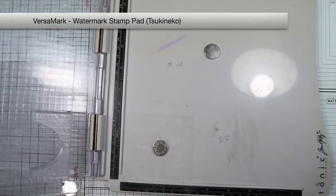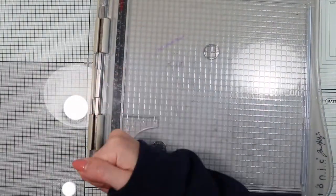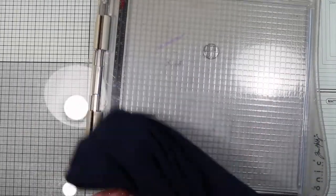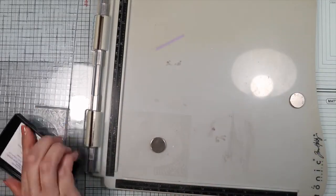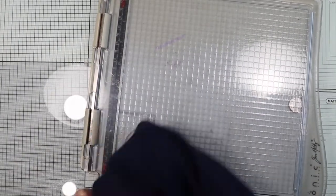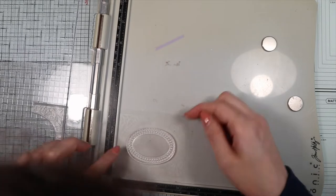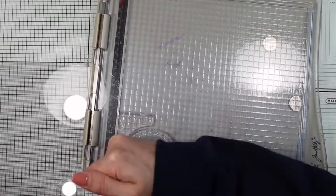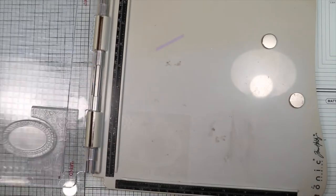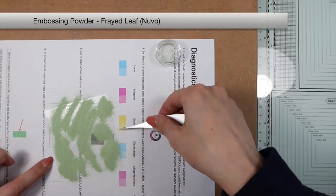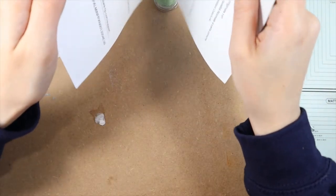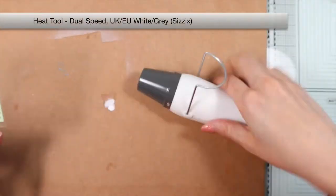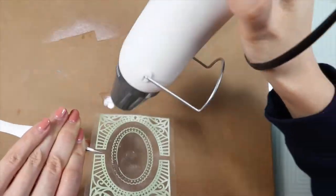For stamping I'm going to use the clear VersaMark ink. I apply the green embossing powder from the kit. And I'm going to melt the powder with my heat tool.